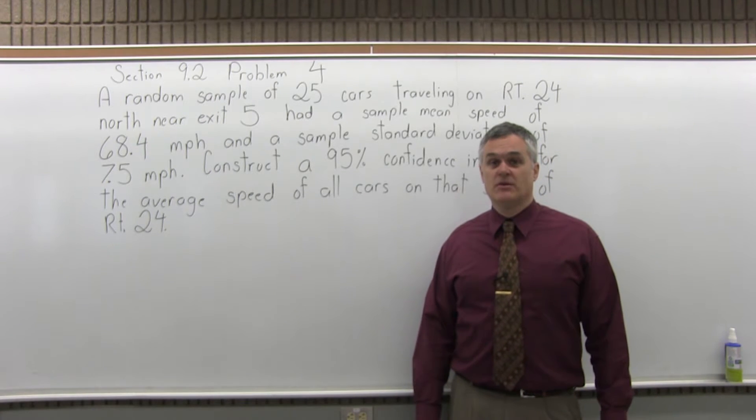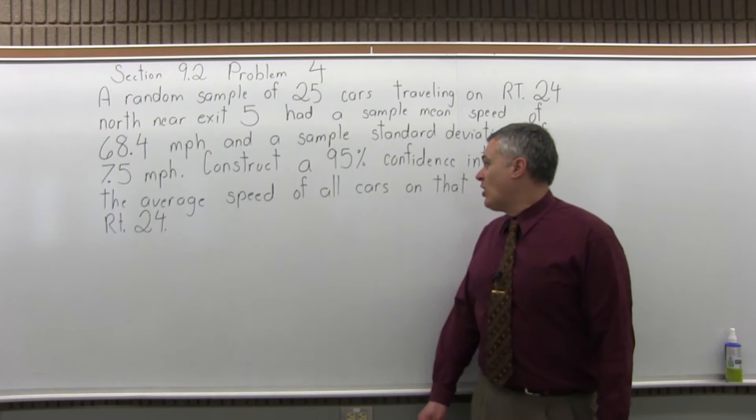This is Section 9.2, Problem 4. It says a random sample of 25 cars traveling on Route 24 North near Exit 5 had a sample mean speed of 68.4 miles per hour and a sample standard deviation of 7.5 miles per hour. Construct a 95% confidence interval for the average speed of all cars on that stretch of Route 24.